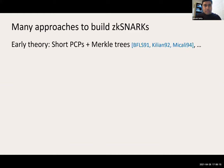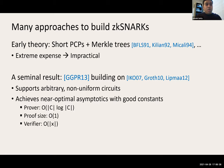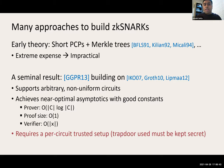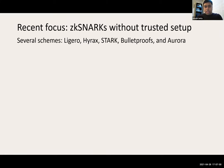There are many approaches to build ZK-SNARKs, going back to the works of Kilian and Micali. Of course these are extremely expensive, relying on PCPs. The seminal work of GGPR provides ZK-SNARKs for arbitrary non-uniform circuits that achieve near-optimal asymptotics with good constants. A well-known problem is that it requires a per-circuit trusted setup — the trapdoor used in setup must be kept secret to ensure soundness. This has motivated another class: ZK-SNARKs without trusted setup.